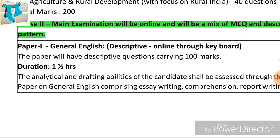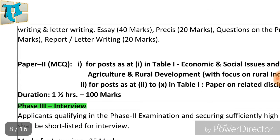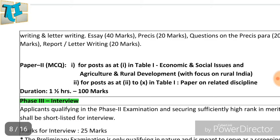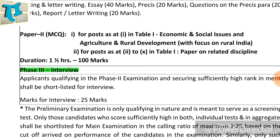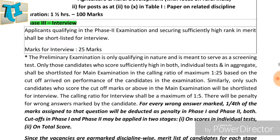The Phase 2 main exam includes Paper 1 (general issues, online) and Paper 2 (multiple choice), covering Economic and Social Issues, Agriculture and Rural Development. Phase 3 is the interview, which carries 25 marks. Candidates who qualify the main exam will be called for interview.